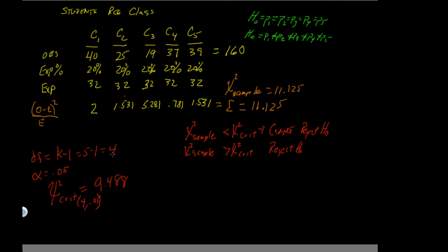Our degrees of freedom remains 4 and alpha remains 0.05, so the critical value stays at 9.488. Now we examine the result: 11.125 is our chi-squared sample, which is greater than 9.488 from the table. Thus, we can reject the null hypothesis, meaning these observed values are significantly different from the expected value of equal distribution.